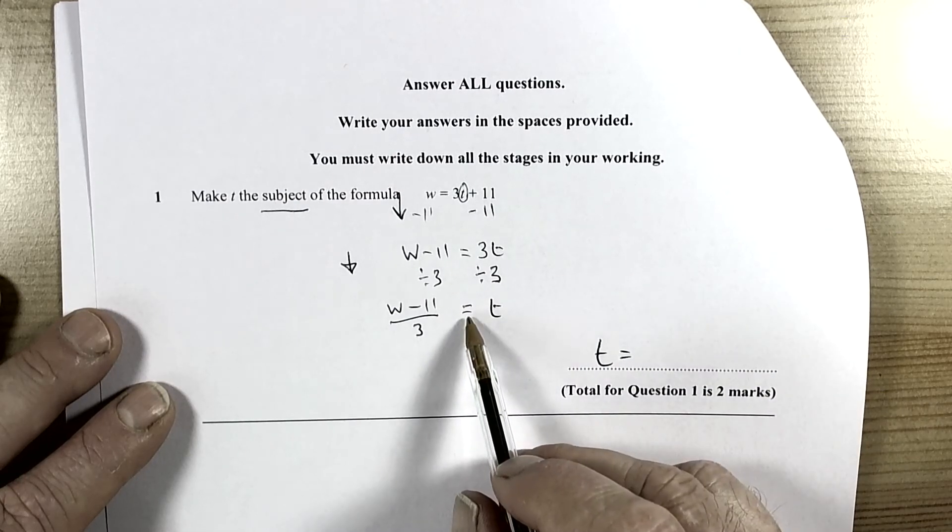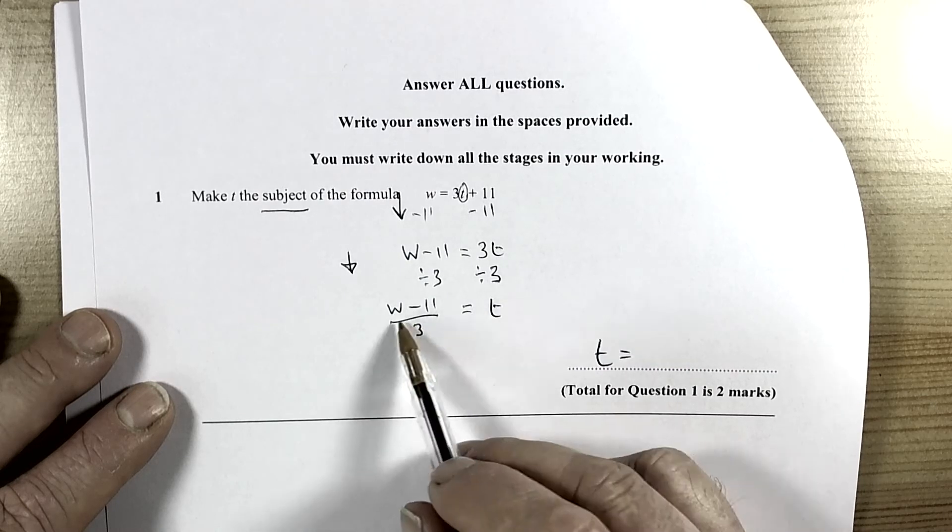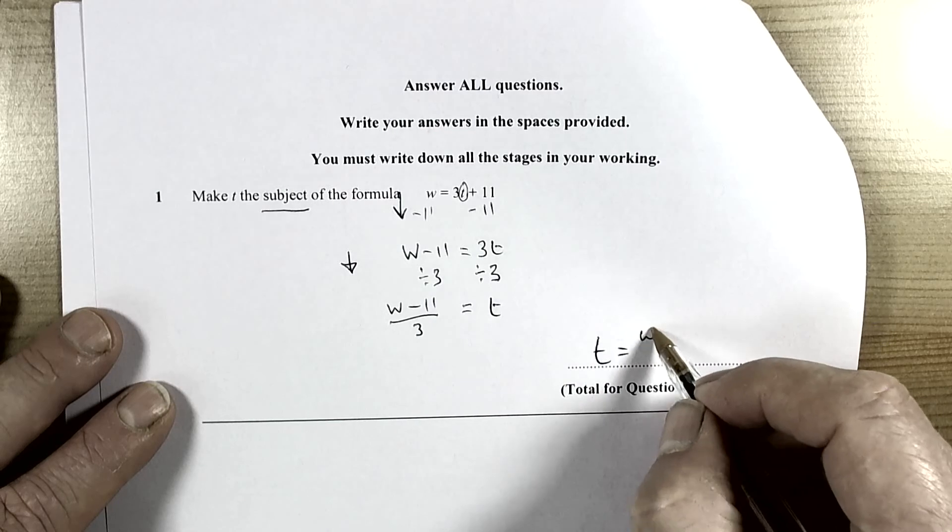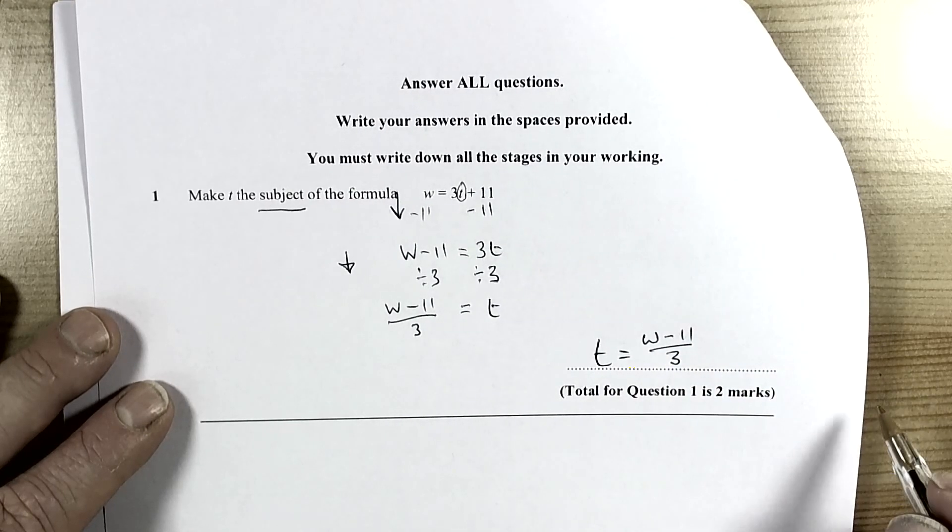Now because the equals is between t and the left hand side here, they are interchangeable, so we can just swap those two over to make t equals w take away 11 over 3. So that is making t the subject of the formula.